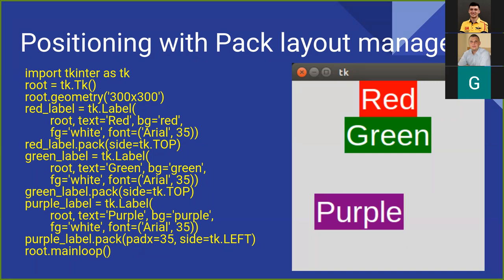The first label is red and it's packed to the top, and as we can see it aligns in the center horizontally. The second label is green and it's also packed to the top, but it was packed after the red label so it sticks to the top of the remaining space. There is also a purple label — we pack it to the left with 35 pixels padding, so it takes the space left after the previous two labels and aligns in the middle vertically, sticking to the left with 35 pixels padding horizontally.